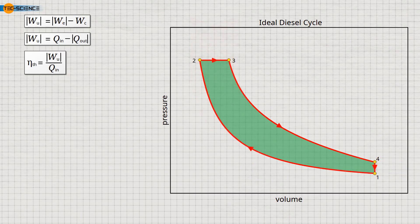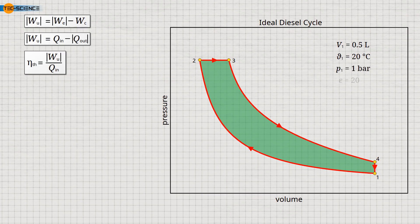Let us now look at an example of calculating the power and fuel consumption of a diesel engine. We have already covered a similar example in the video on the ideal auto cycle. Therefore, in this video we will not go into all the details, but focus on the main points. As an example, we consider a four-cylinder four-stroke diesel engine with a maximum cylinder capacity of 0.5 liters. The air-fuel mixture is drawn in at a temperature of 20 degrees Celsius and a pressure of 1 bar and compressed at a compression ratio of 20. For simplicity, the diesel-air mixture is considered as pure air with an isochoric specific heat capacity CV of 718 joules per kilogram per kelvin and an isobaric specific heat capacity CP of 1005 joules per kilogram per kelvin. Using the ideal gas law, we can determine the mass of gas in the cylinder, which is 0.6 grams.